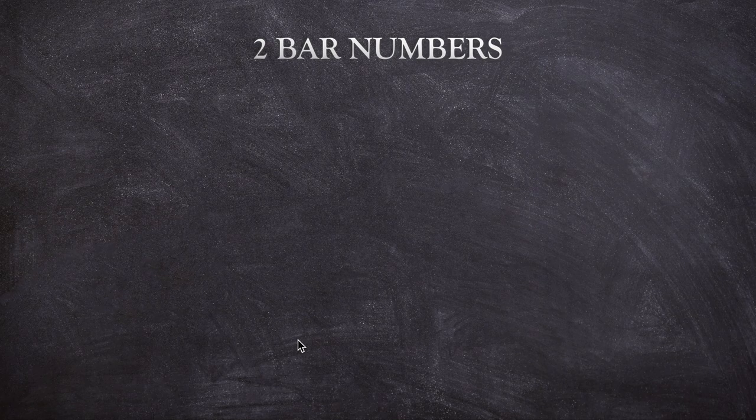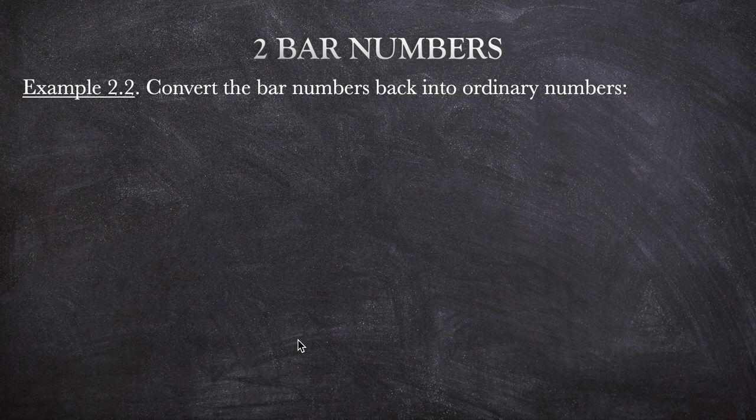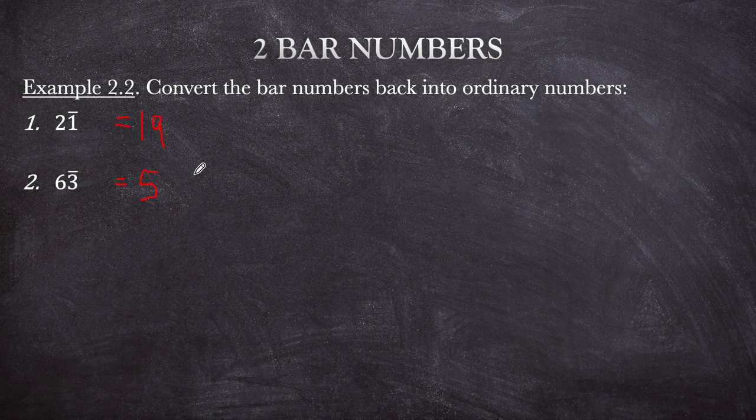You can also convert bar numbers back into ordinary numbers. For example, 2 bar 1 — subtract 1 from it — gives 19. Next, 6 bar 3 — subtract 1 — applying 'all from 9 and the last from 10' gives 57. And 2 bar 21...